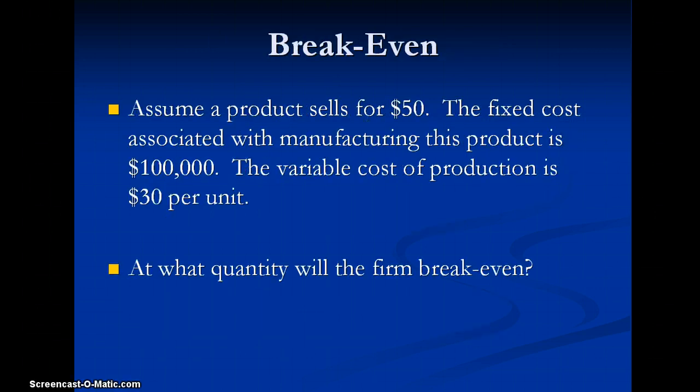So let's assume a product sells for $50. The fixed cost associated with manufacturing this product is $100,000. That might be equipment or space that we have to rent or something like that. And the variable cost of production is $30 per unit. Generally, that's stuff like direct labor and direct materials. We want to find out what quantity will the firm breakeven.